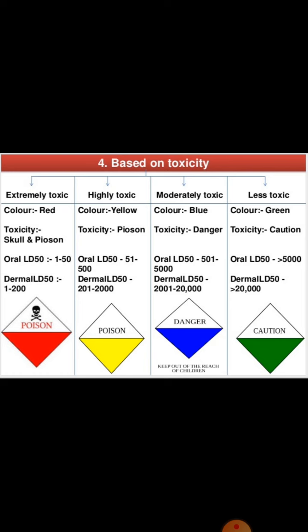We use different colors to show toxicity. If extremely toxic, the color is red; the symbol shown is skull and crossbones; oral LD50 is 1–50 and dermal LD50 is 1–200. Highly toxic is labeled with yellow color. Moderately toxic is labeled with blue color and designated 'danger'. Less toxic is labeled with green and the toxicity label reads 'caution', used for doses less than 500, with oral lethal dose of 500 to 5000 and dermal up to 20,000.